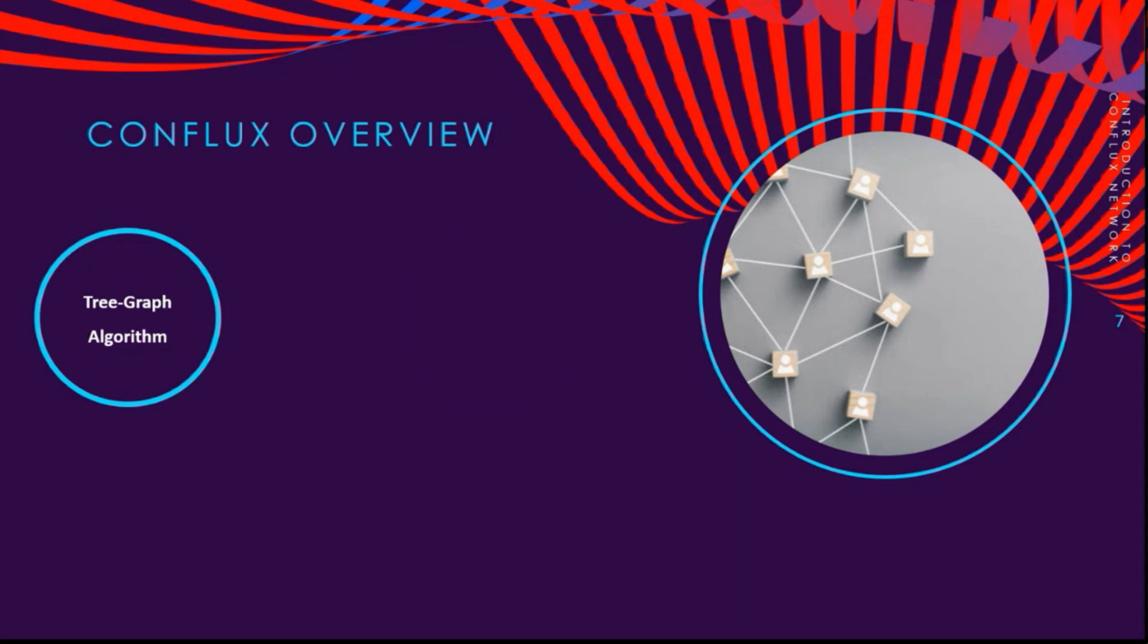Next we have the GHAST selection rule. Conflux replaces the traditional longest chain rule with the GHAST rule. This rule allows Conflux to prevent liveness attacks by enabling the dynamic adjustment of block weights and block types. This is quite an interesting topic. We will go deeper into this in a few moments.